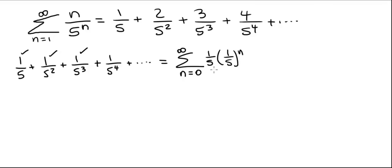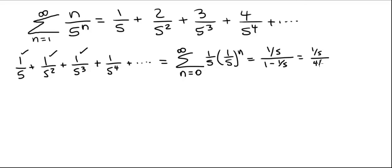Now this is a geometric series with r equal to 1/5. In standard form, it converges to a divided by 1 minus r, which is 1/5 divided by 1 minus 1/5. So this is 1 over 5 divided by 4 over 5, which equals 1 over 4.